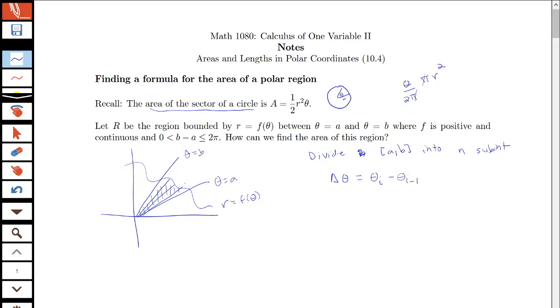So I'm thinking I have some theta i minus 1 angle and then a theta i angle in there where i could range from 1 to n. I can call delta A sub i the area of the i-th region.